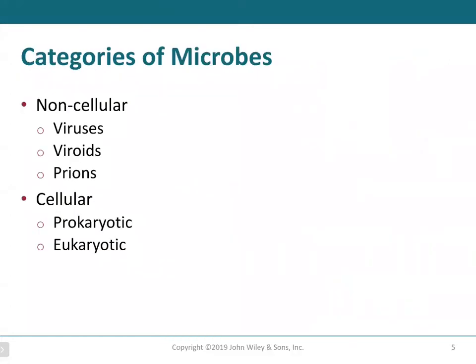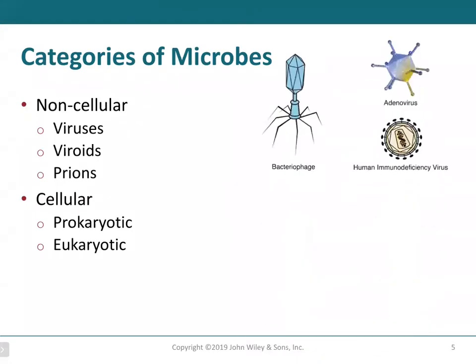There are several categories of microbes. We have the non-cellular and the cellular microbes. The non-cellular microbes are not made up of cells or have no cellular component at all. Examples of that are viruses, viroids, and prions. Viruses are just genetic materials enveloped in a protein coat, and sometimes a lipid coating as well, as in the case of the coronavirus.